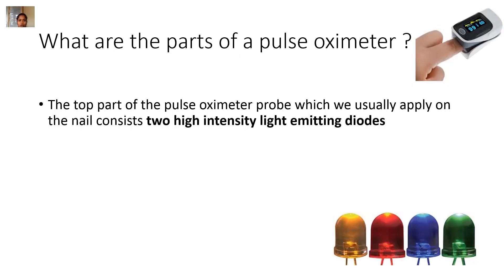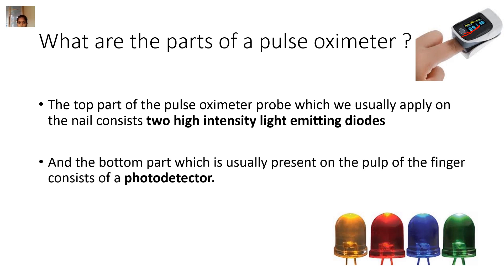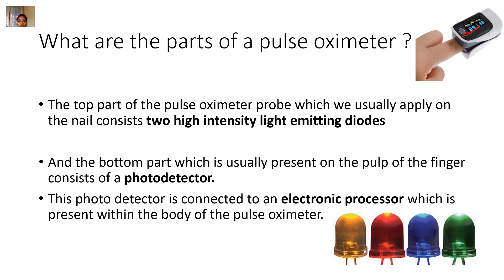What are the parts of a pulse oximeter? If you see in the diagram, the top part of the pulse oximeter probe, which we usually apply on our nail, consists of two high intensity light emitting diodes, shortly called LEDs. A picture of that is also seen at the bottom of the slide. The bottom part of the pulse oximeter, which we usually put on the pulp of the finger, consists of a photodetector. This photodetector is then connected to an electronic processor present within the body of the pulse oximeter probe.